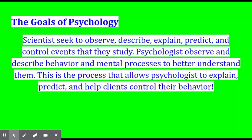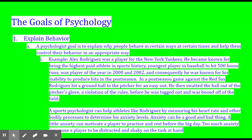The goals of psychology: psychologists are scientists. They seek to observe, describe, explain, and predict, and hopefully control the events that they study. Psychologists observe and describe behavior and mental processes in order to better understand them. The process that allows psychologists to explain and predict can help psychologists help their clients control their behavior. Psychologists' goal is to explain why people behave in certain ways at certain times.